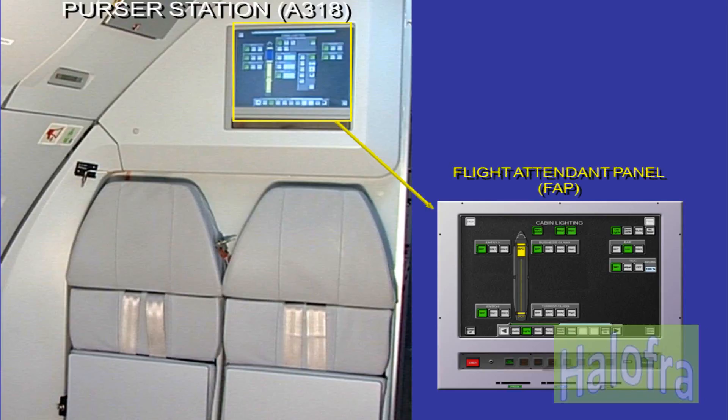The new FAP is located at the purser station and displays different pages related to the different systems connected to the CIDS. The PTP is removed on the new configuration. The new FAP is used for control and programming, while the MCDU is used for test.